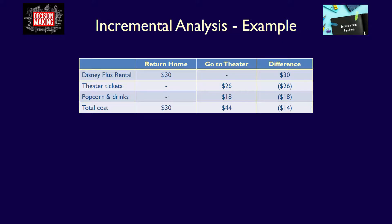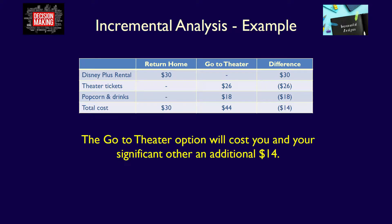What exactly is this telling us? We're comparing go to theatre with return home. It's telling us that go to theatre will cost you and your significant other $14 more than the return home alternative. In financial terms — a quantitative analysis — going to the theatre will cost you $14 more than staying home. This completes our quantitative analysis of the two alternatives.